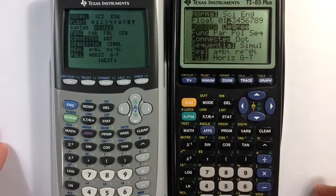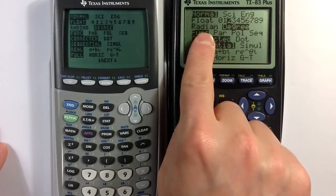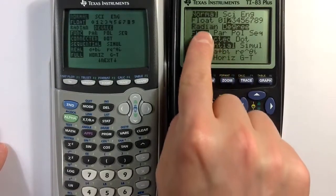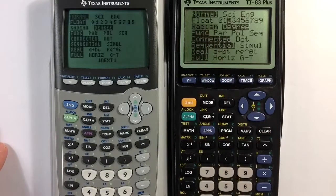In calculus in particular, you always want to measure angles in terms of radians. You want to make sure your calculator is set to radians, and again you can put the blinking cursor on that choice and then hit enter to select it.